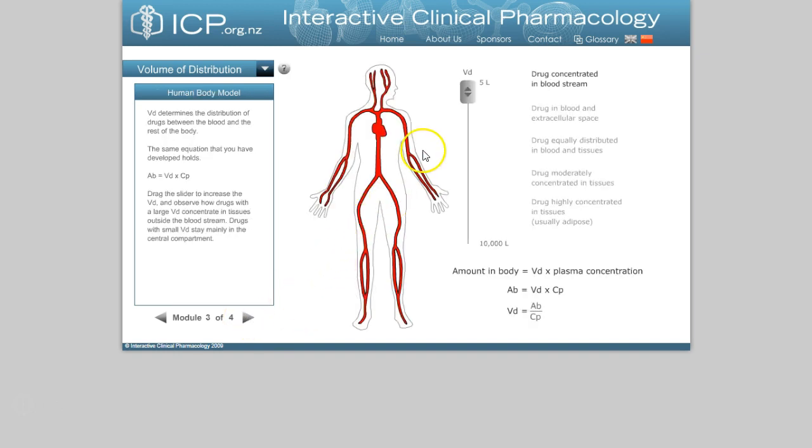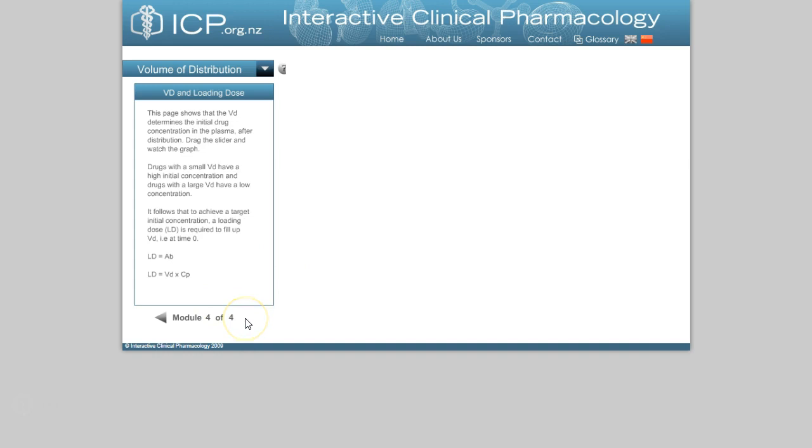Here we can see it in the human body. Here's a drug that distributes only into the vasculature, which is about 5 liters. And here we can see it starting to distribute more into the extracellular space, blood and tissues, other tissues, and actually concentrating in the fat tissues, where virtually all the concentration is distributed through the body and there's very little left in the intravascular compartment.